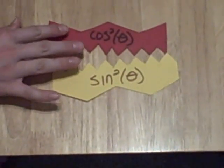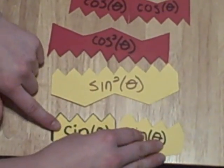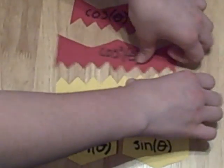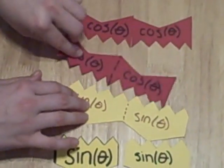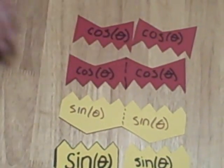Also, we have these longer shapes, which are cosine squared and sine squared. If you put together two cosines or two sines, you see that they create the same shape. If you flip over the squares, you can see that they are made up by multiplying two cosines or two sines.